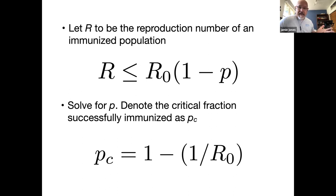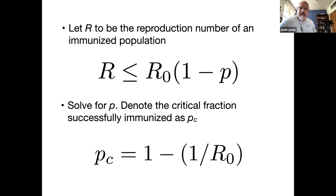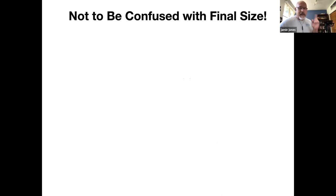Taking a middling estimate for R-naught for COVID of about 2.5, we have to vaccinate approximately 60% of the population. For measles with an R-naught of nearly 20, it's 1 minus 1/20 = 0.95 — we basically have to vaccinate the entire population. But importantly, there's been this obsession with herd immunity and the idea that when we achieve it the pandemic magically goes away. We need to be really careful not to confuse this with the final size of the epidemic. The final size will typically be much bigger than the herd immunity threshold, and the difference is what's known as epidemic overshoot.